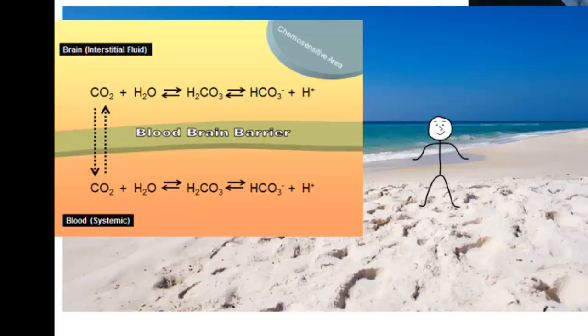Conversely, if the partial pressure of carbon dioxide goes down, that causes the brain ISF pH to increase, to become more alkaline. So the central chemoreceptors are only sensitive to partial pressures of carbon dioxide indirectly.